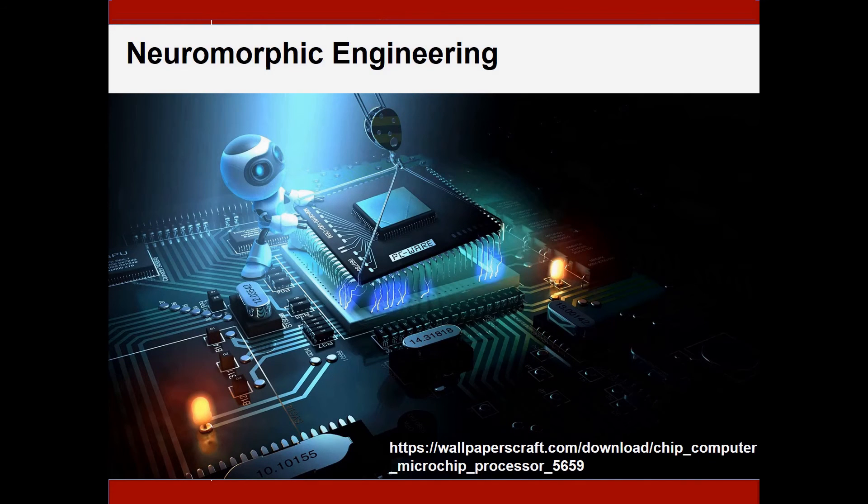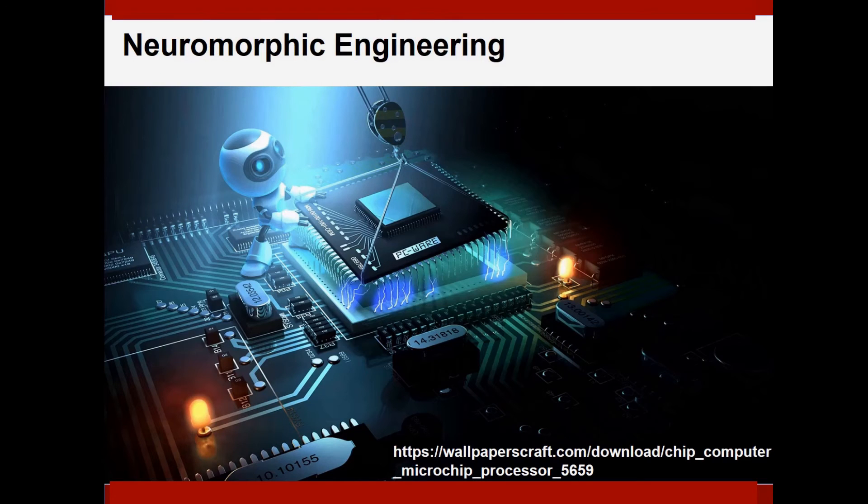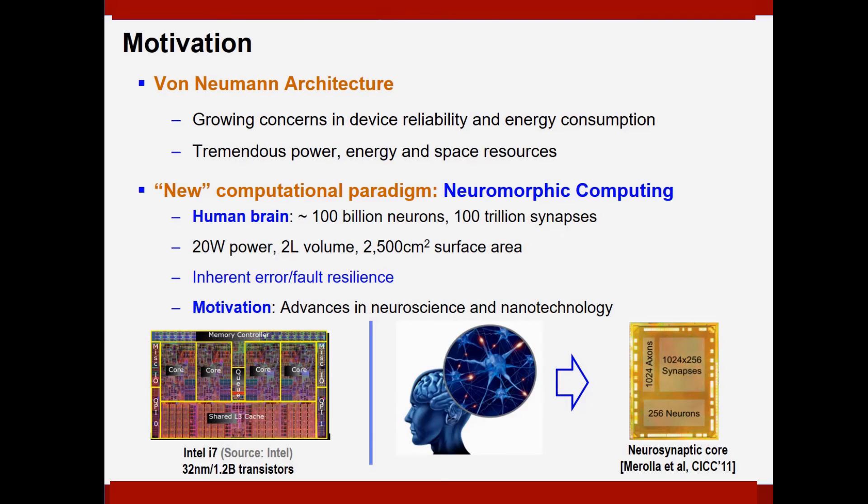From now on, I will talk about our neuromorphic system to show the advantage of the hardware machine learning. In this area of big data and machine learning, there are growing concerns in device reliability and energy consumption for the traditional Von Neumann architectures. Meanwhile, the Von Neumann machines also consume tremendous power, energy, and space resources. However, the brain-inspired neuromorphic computing provides an appealing architecture solution, which shows great efficiency in terms of both hardware cost and also the runtime. In addition, the inherent error resilience offered by the brain-inspired neuromorphic system is very suitable for large-scale integration in the VLSI technology.